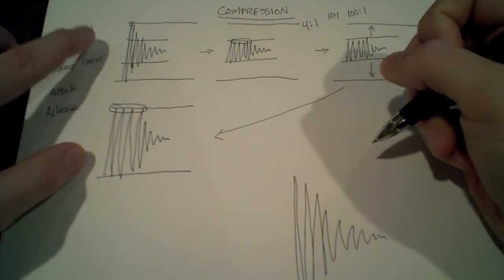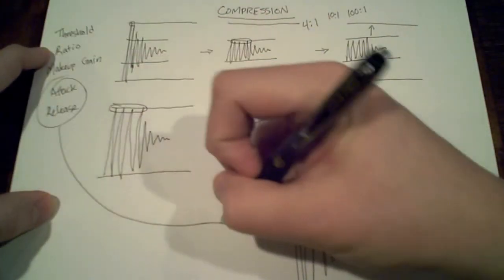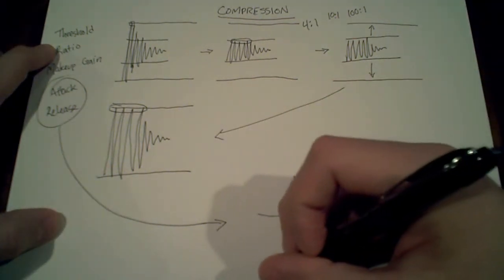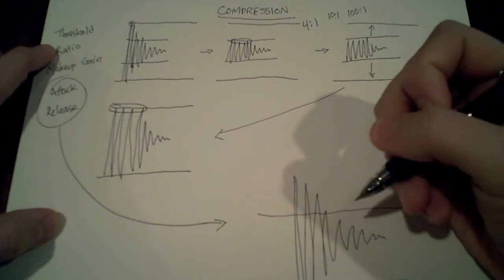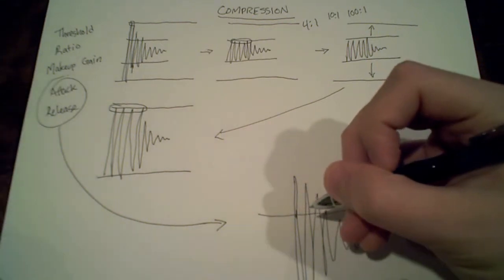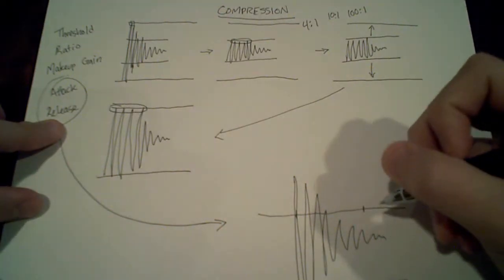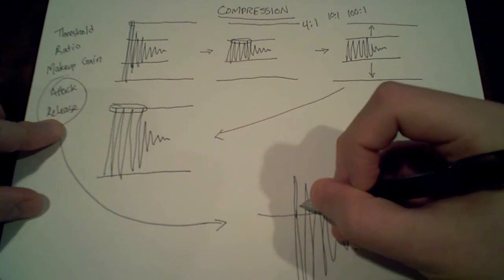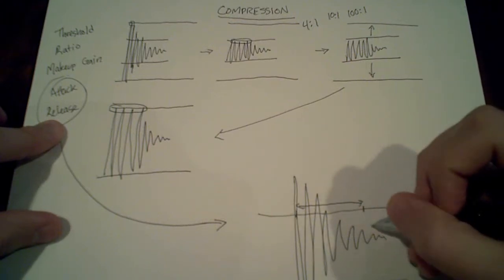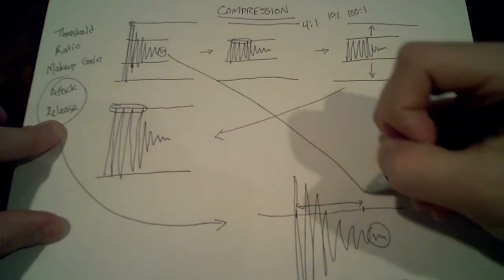Attack and release, relative to compression, are just numerical parameters that dictate how compression operates. The attack is the amount of time after the signal crosses the threshold that compression starts. Release is the amount of time after attack that compression takes place — so compression compresses the signal within that window, but not after. The section after release will be identical to the original uncompressed signal.